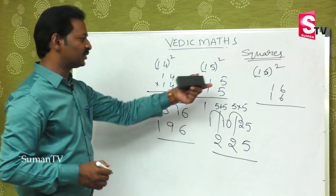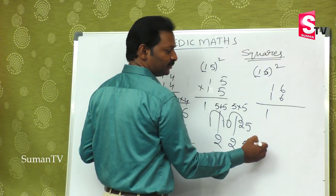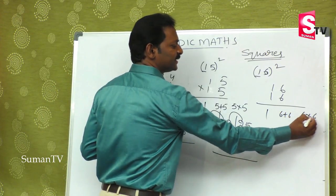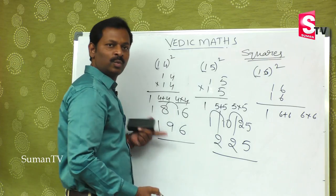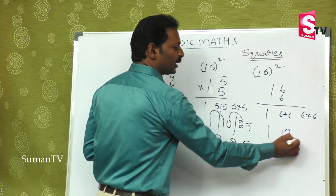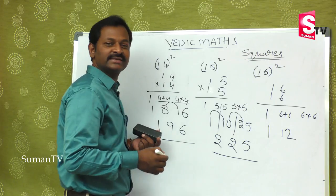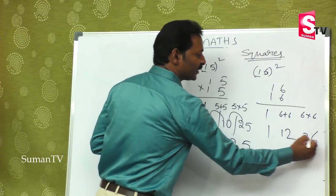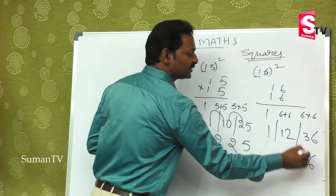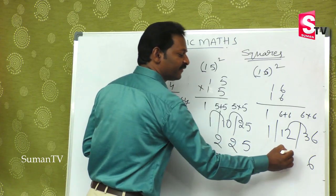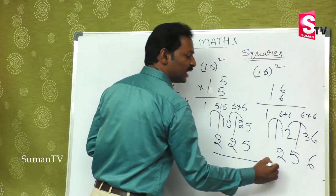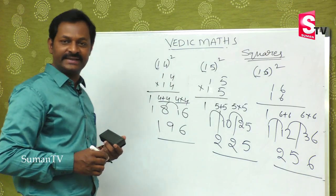For 16 square: 1, then 6 plus 6 is 12, then 6 into 6 is 36. Final balancing: keep 6 from 36, carry 3 and add to 12 giving 15, keep 5, carry 1 to 1 giving 2. So the answer is 256.